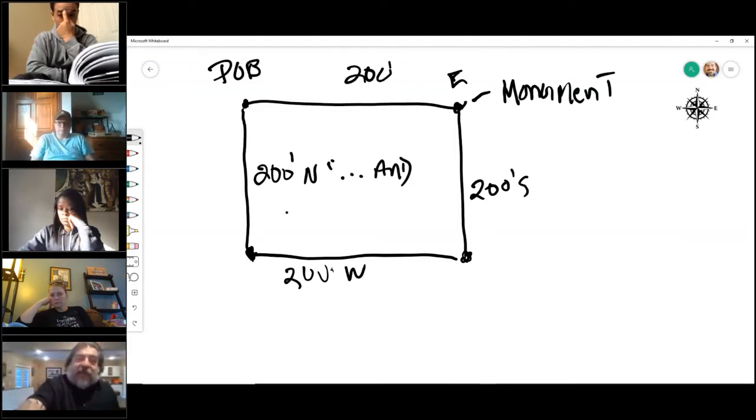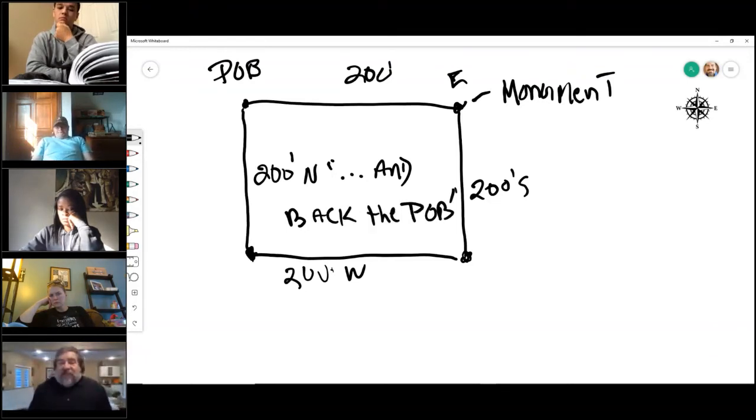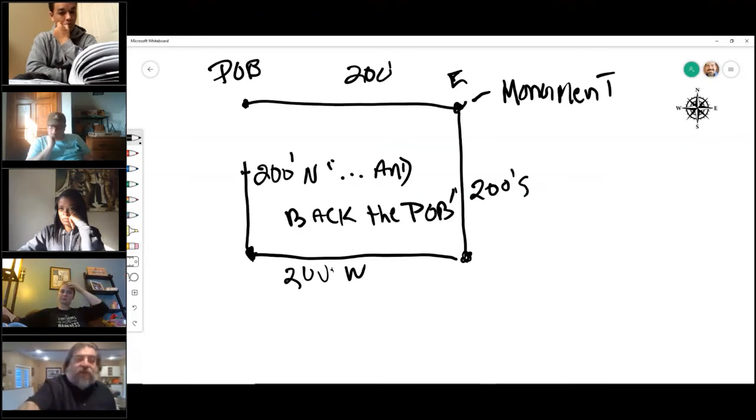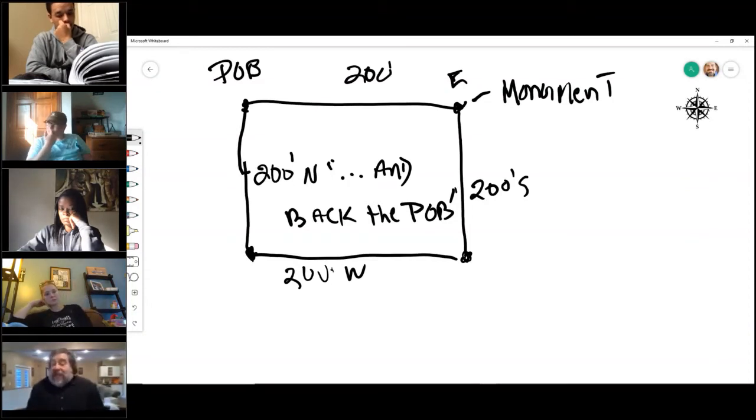Because it must close that box. If something happened and you mismeasured and you ended up with something that looked like this, that would drive title companies crazy and probably stop the closing. So it's going to say something like 200 feet north and back to the point of beginning, so that you in fact close this loop so that you have encompassed an entire piece of property. So those monuments are the defining boundary corners.